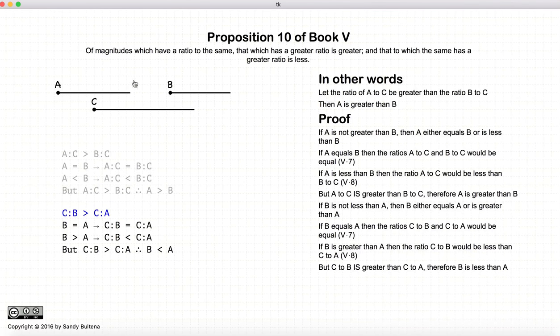So there we have, if A to C is greater than B to C, A is greater than B, or if C to B is greater than C to A, then B is less than A.